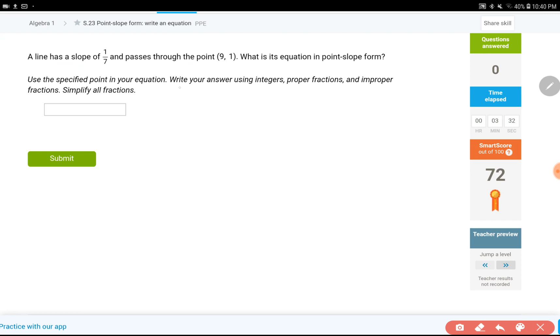A line has a slope of 1 over 7, so givens are slope equals to 1 over 7, x1 equals to 9, y1 equals to 1. That's x1 and y1, this is m.